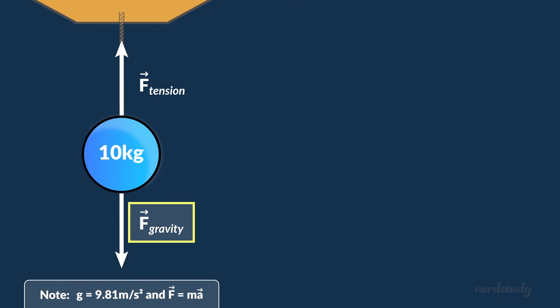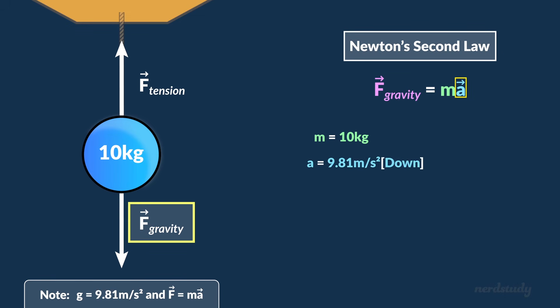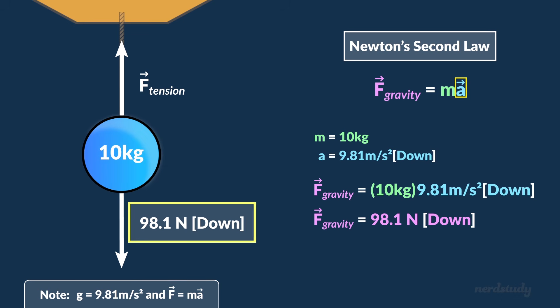To find the force of gravity, in other words, the weight, we'll need to use Newton's second law. We already know the mass of the ball, which is 10 kilograms. As for the acceleration, that's constant near the Earth's surface, which is 9.81 meters per second squared downward. And once we substitute those values into the equation, we'd get 98.1 Newtons downward for the weight of the ball.